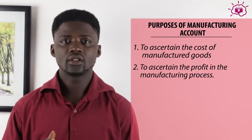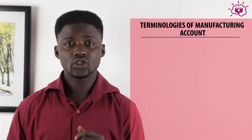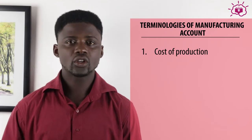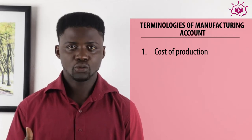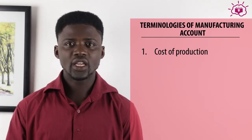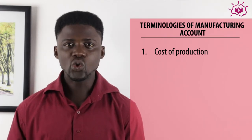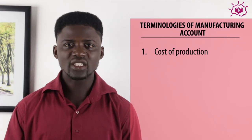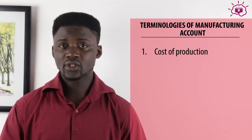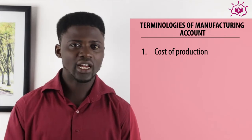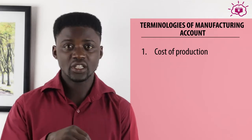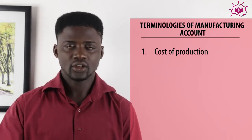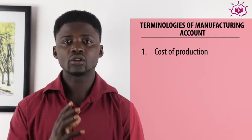Now let's talk about terminologies in preparing manufacturing accounts. Number one: cost of production. Cost of production is the total expenditure incurred in the production of outputs. This is obtained by taking into account all expenditure relating to the manufacturing process — everything put together to transform a raw material from its original state to its final state.